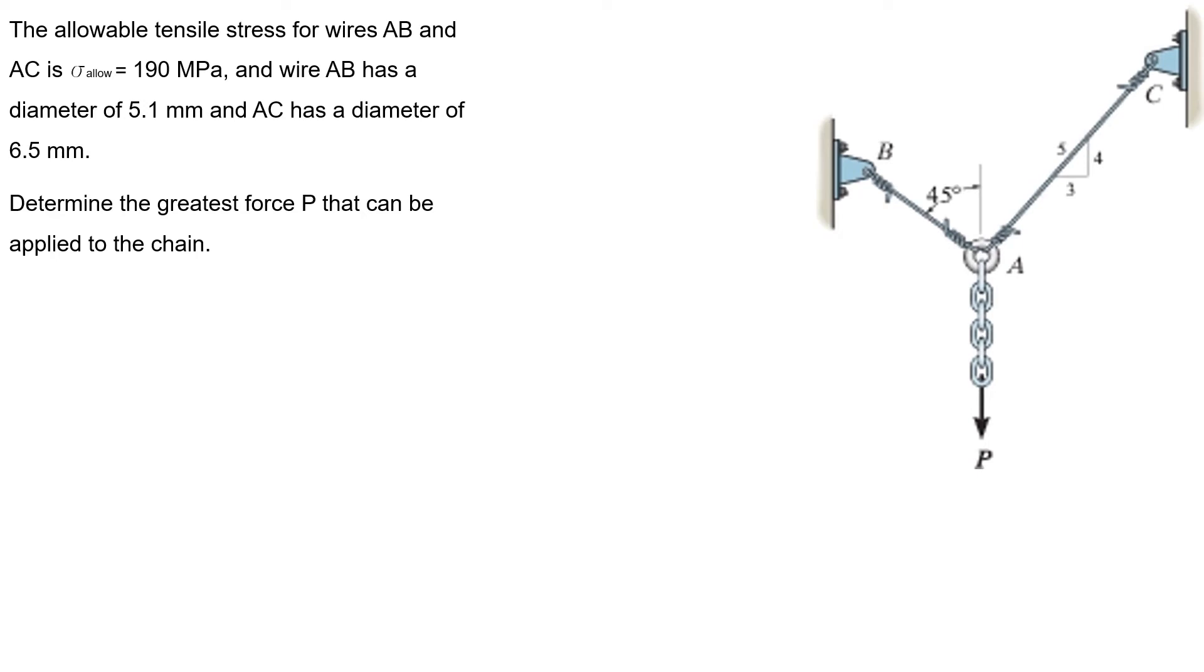Hello guys. This is the fifth problem of homework 5. The allowable tensile stress for wires AB and AC is sigma-allowable equals 190 MPa, and wire AB has a diameter of 5.1 mm and AC has a diameter of 6.5 mm. Determine the greatest force P that can be applied to the chain.